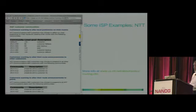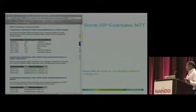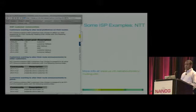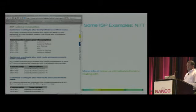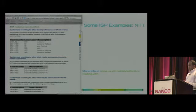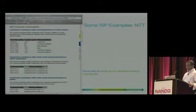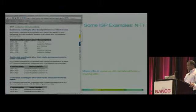Here's another example from NTT. NTT uses different communities for customers to influence what type of local preference to set. If NTT receives a specific community — for example, 9914:450 — it will set a local preference of 96. If it is 460, it will set a local preference of 98, and so on.